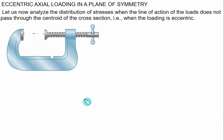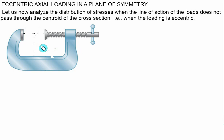Here we introduce eccentric axial loading in a plane of symmetry. We want to find out the stress distribution when we have eccentric loading. Eccentric loading means that the load will not pass through the centroid of the given cross section. For this we consider a vice — if we place a job and tighten it with the handle, it will exert equal and opposite forces on the two supports along this line of action.